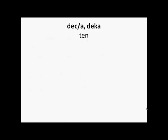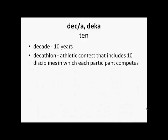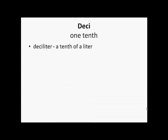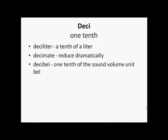'Dec' or 'deca' is a prefix which means 10. So decade is a span of 10 years. Decathlon is an athletic contest that includes 10 disciplines in which each participant competes. December was formerly the 10th month of the Roman calendar. 'Deci' means one-tenth — so deciliter is one-tenth of a liter, decimate means to reduce numbers dramatically, and decibel is one-tenth of the sound volume unit bell.